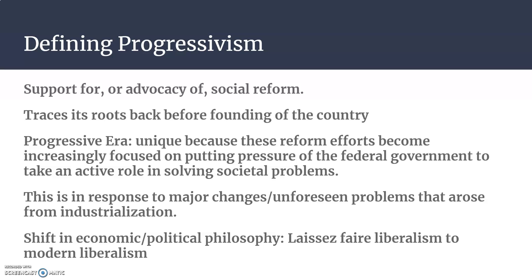Most Americans up to this point really felt it was not the government's job to get involved in social issues — that the government needed to be small and needed to stay out of people's way. But industrialization produces all of these unforeseen consequences. As the economy grows and more and more economic power gets centralized in the hands of factory owners, we start to see more and more abuses of that power. It reflects itself in the crippling poverty experienced by your average American worker, and it manifests itself in the epidemic of on-the-job injuries and deaths occurring because of dangerous working conditions. So increasingly, people start to challenge this notion that the government shouldn't get involved, and the answer becomes: let's start putting pressure on the federal government to actually take an active role in solving societal problems.